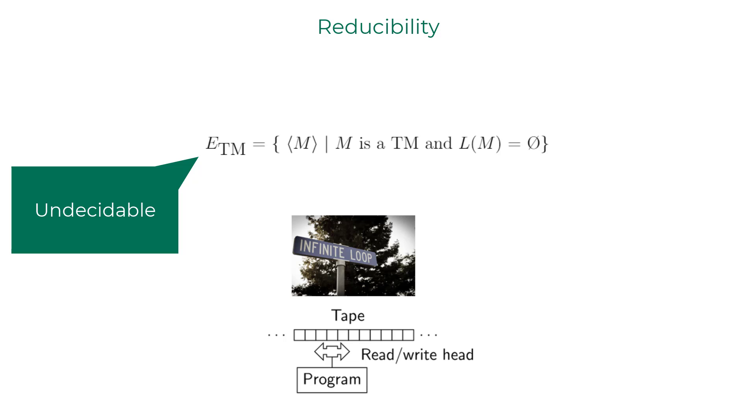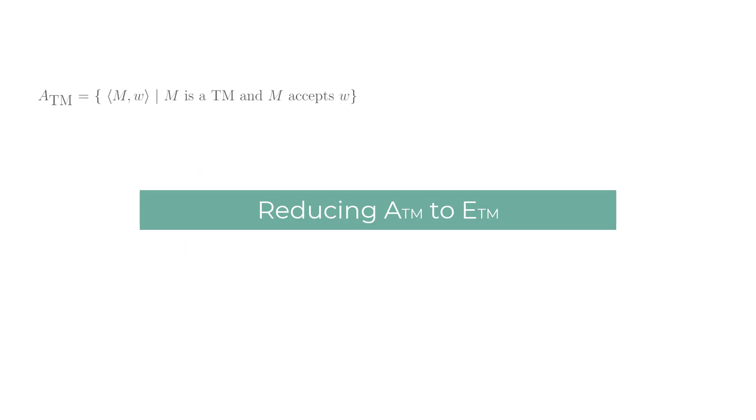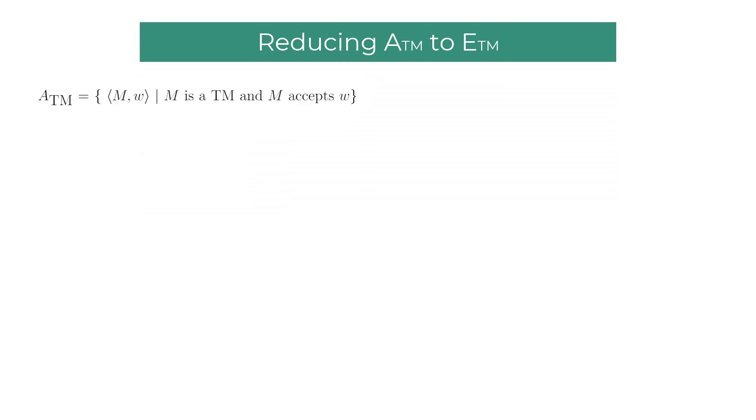Turns out ETM is undecidable, but the theoretical computer scientist in you should not just take my words for granted. You should seek for a concrete proof. We can reduce ATM problem to ETM problem to prove ETM's undecidability. If we assume that ETM has a magical decider R, it can answer the question whether a Turing machine's language is empty set or not.